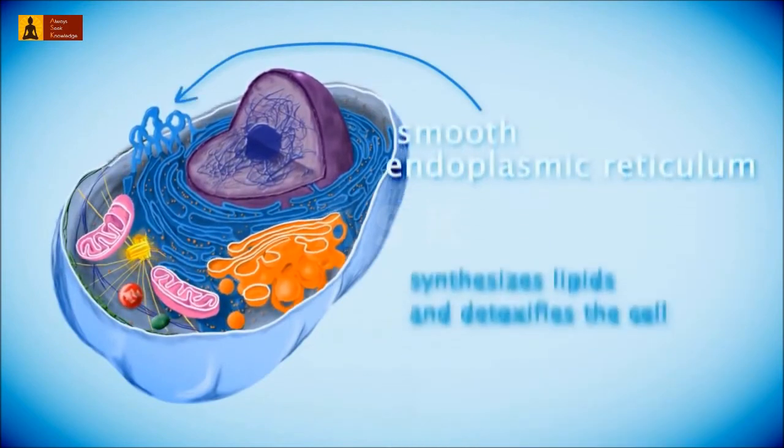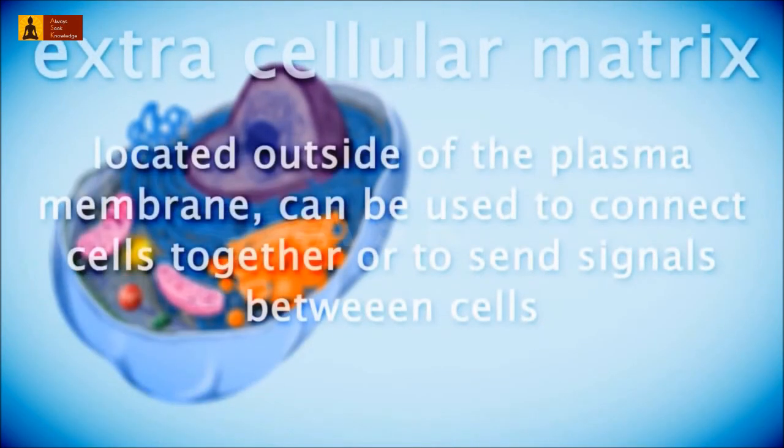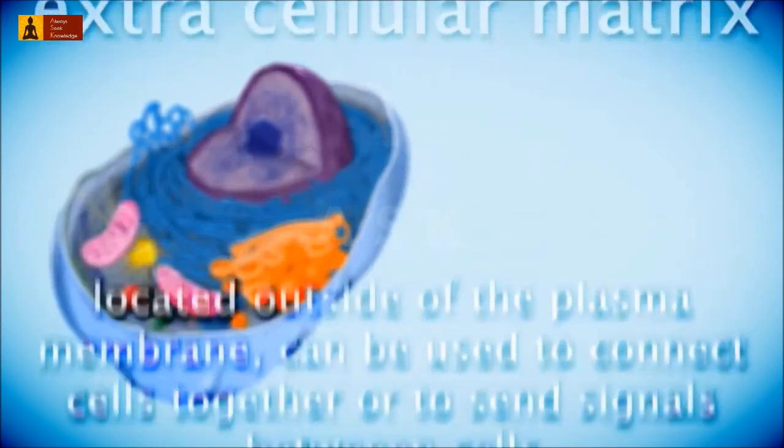The smooth endoplasmic reticulum synthesizes lipids and detoxifies drugs and poisons. The extracellular matrix in animals integrates changes occurring both on the inside and the outside of a cell.